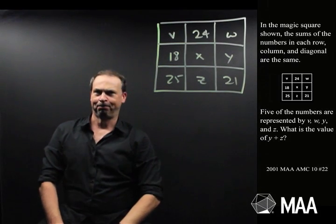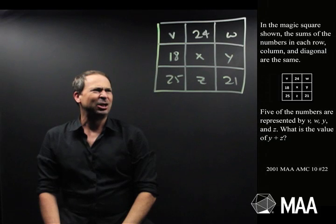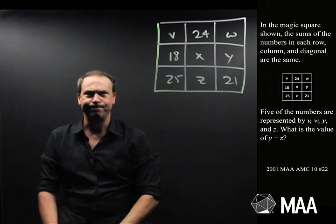Definitely feels like an algebra question. Lots of things to work out here. Actually, there's five unknowns: X, Y, Z, V and W.